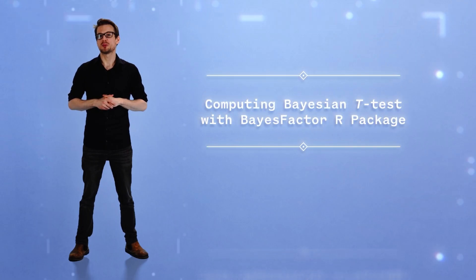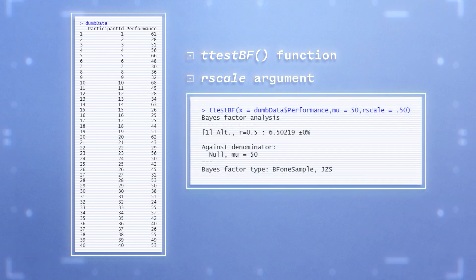In R, we can use the BayesFactor package to conduct the same analysis. We use the same data as before. We use the ttestBF function and use the rscale argument to set the scale parameter to 0.50 just as before. This procedure gives us the same value of 6.5 we obtained in JASP.